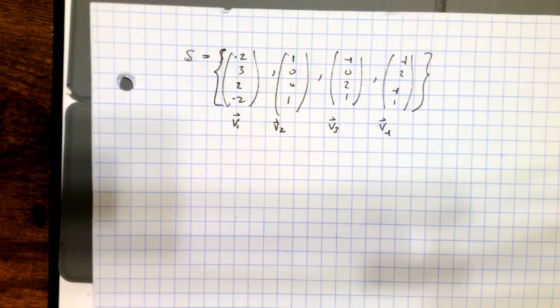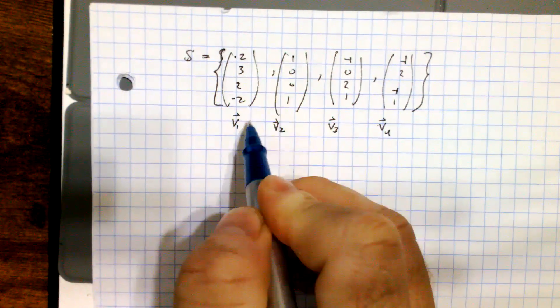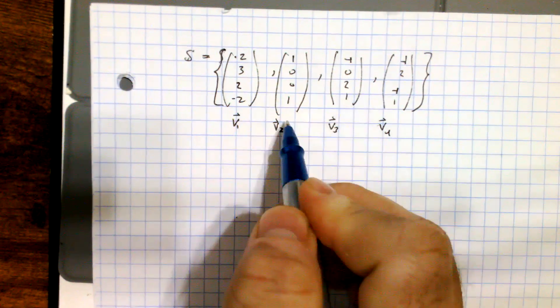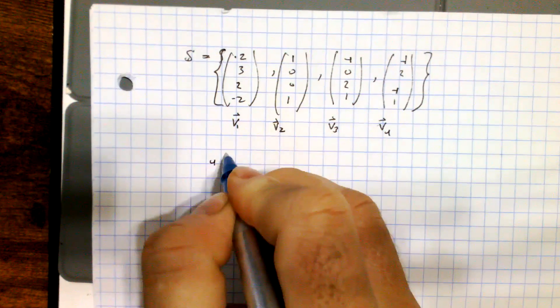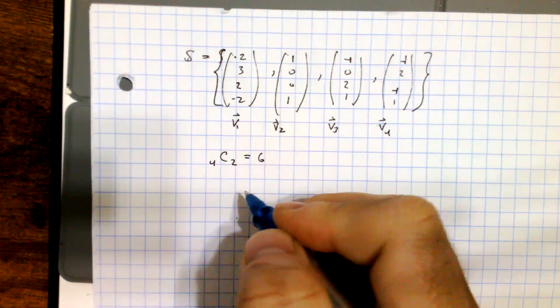So all I need to do is check the, well, I'm going to take two of them and dot them. So I have four products to consider, basically four choose two, which is six dot products to compute.